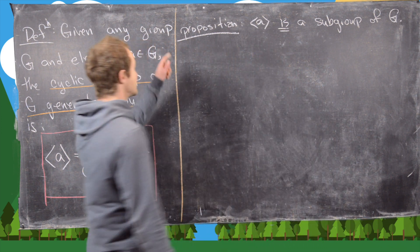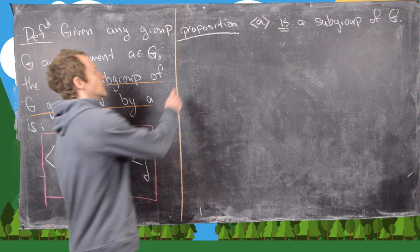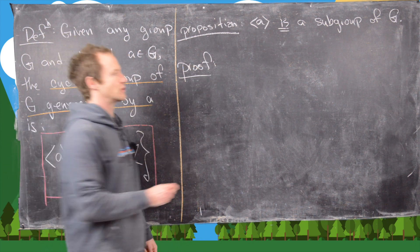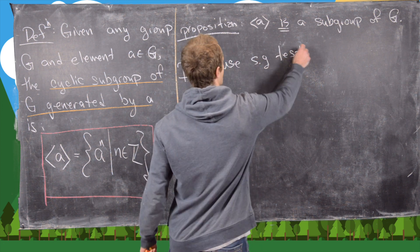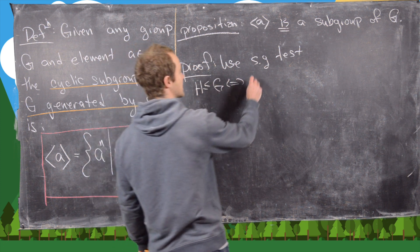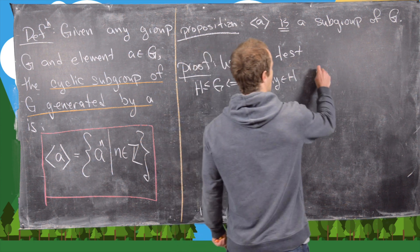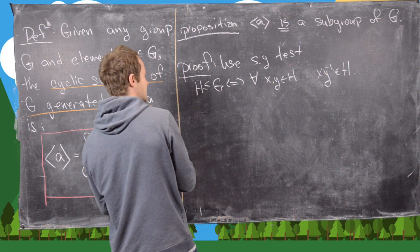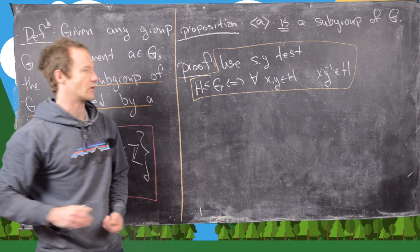The first thing we want to show is that this is actually a subgroup of g. We're going to do this with the subgroup test. The subgroup test says that h is a subgroup of g if and only if for all x and y in h, x times y inverse is also in h. It's a really nice tool for showing that something is a subgroup in one step.